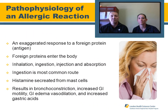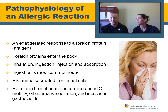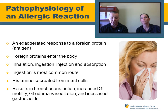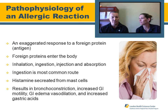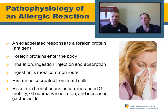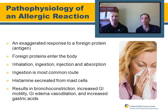A quick review on the pathophysiology of an allergic reaction: it's an antigen-antibody reaction. There's a foreign protein — the antigen — which is either injected, absorbed, ingested, or inhaled. When this foreign protein enters the body it causes a mass reaction. The most common route is ingestion, and as a result, mast cells secrete huge amounts of histamine, resulting in bronchoconstriction.